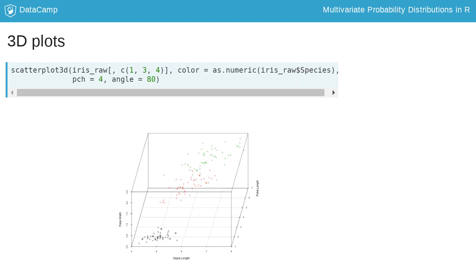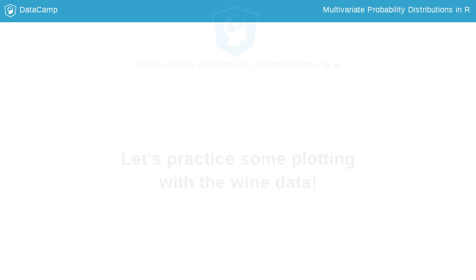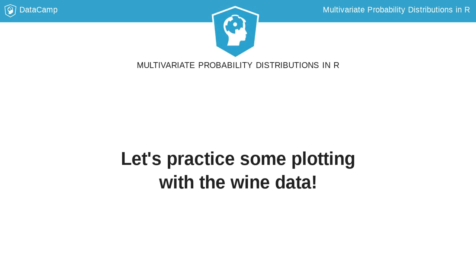You can also specify other arguments when using the scatterplot3D function. For example, here we change the plotting symbols to X's by specifying pch equals 4, and change the viewing angle from default value of 40 to 80 by including the argument angle equals 80. Now it's your turn to make use of some of these plotting techniques and explore the wine dataset.